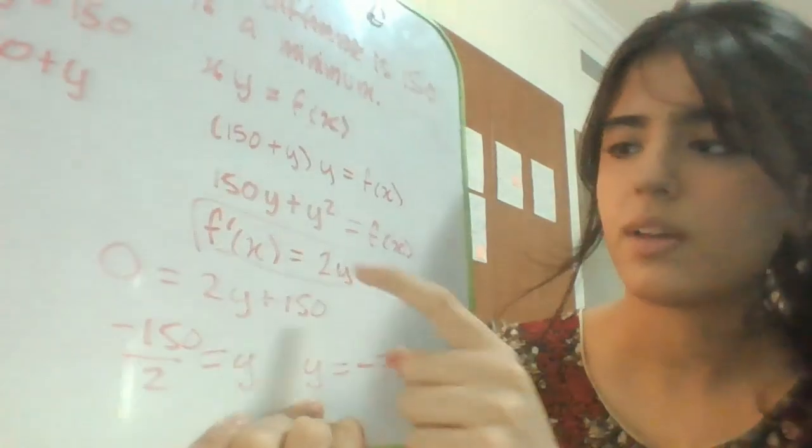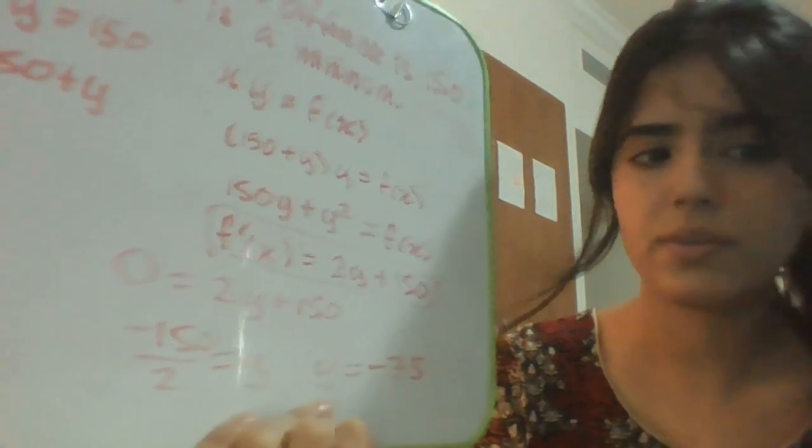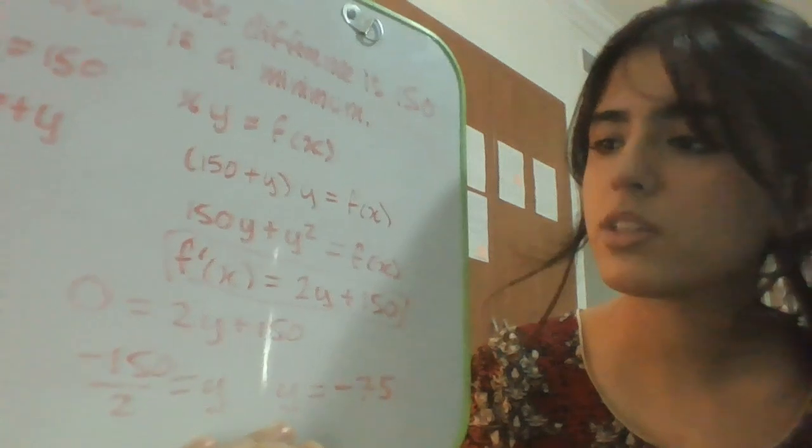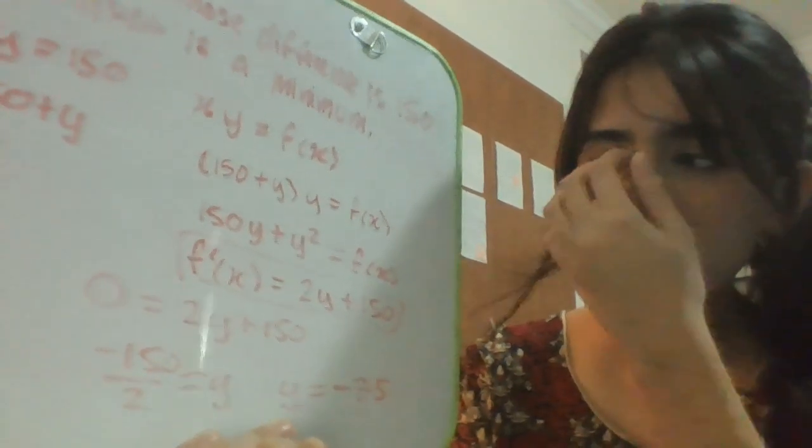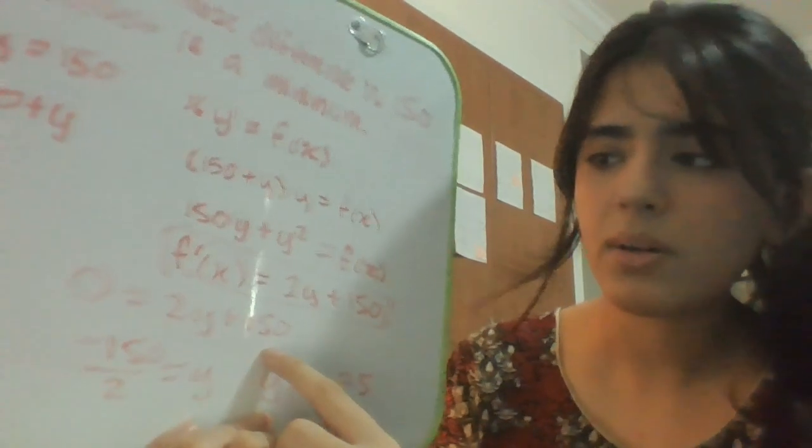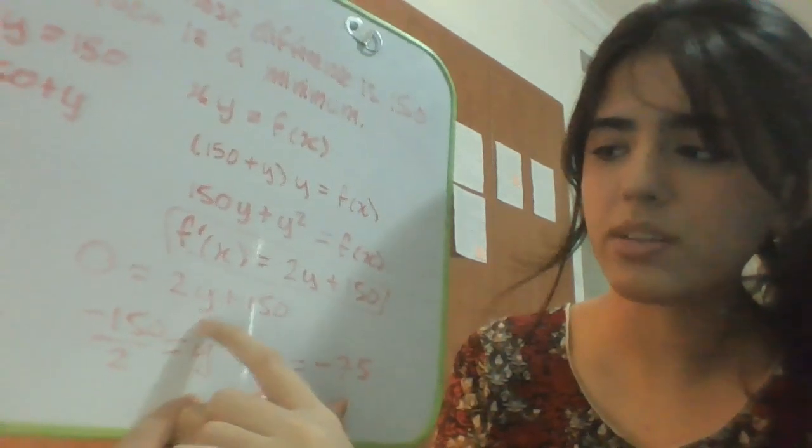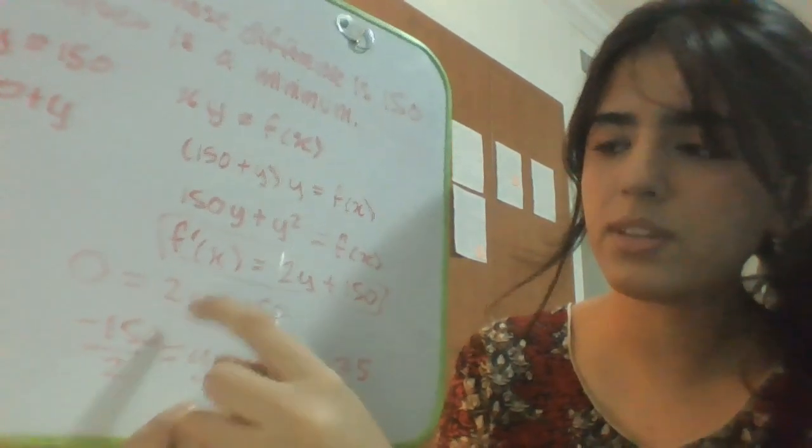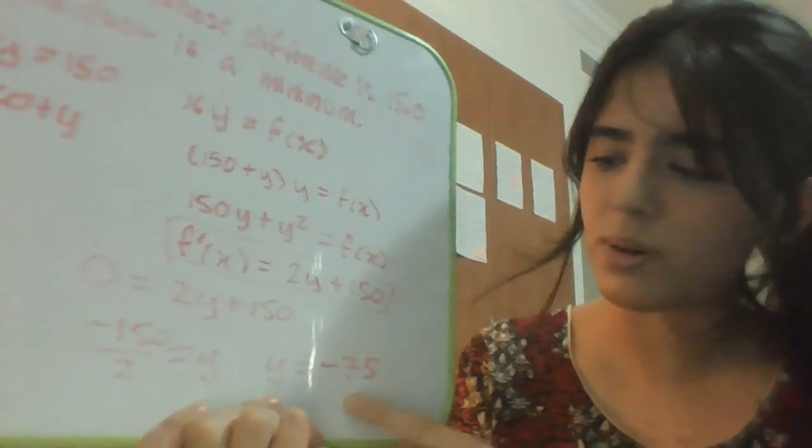Okay guys, so here I've wrote the derivative f prime of x equals 2y plus 150. Okay, now that we have our derivative, we're going to set it equal to 0. So here it's going to be 0 equals 2y plus 150. Now, as I said before, you're going to use algebra to solve for y. So you're just going to move around 150 and then divide it by 2 like right here. And then we found the value of y to be negative 75.